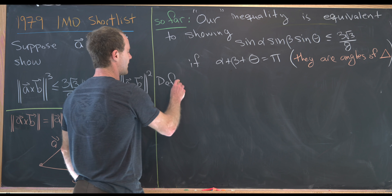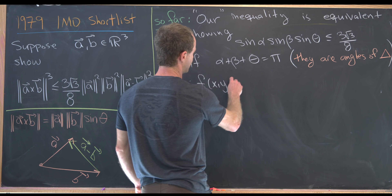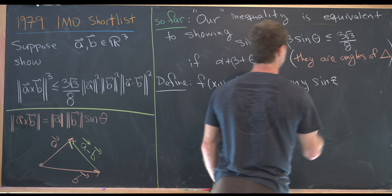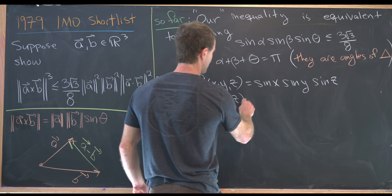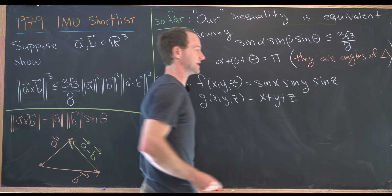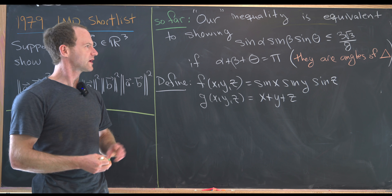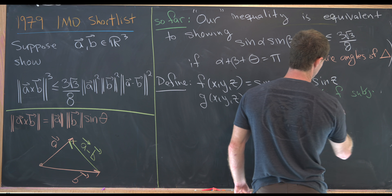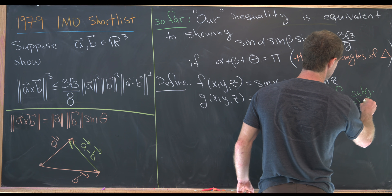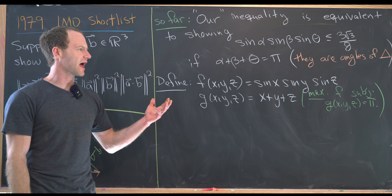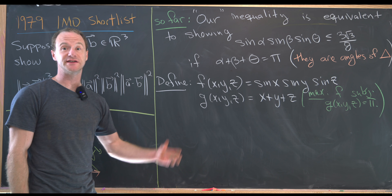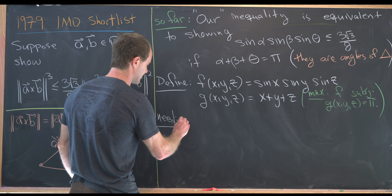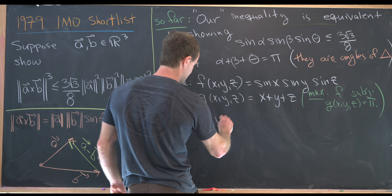Let's define two functions. We let f(x, y, z) equal sine x times sine y times sine z, and g(x, y, z) equal x plus y plus z. Our goal is to maximize f subject to the constraint that g(x, y, z) equals pi. We know the maximum occurs where the gradient of f and the gradient of g are scalar multiples of each other, so we need to solve gradient f equals lambda times gradient g.